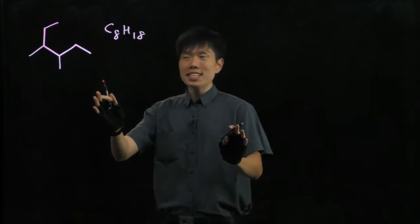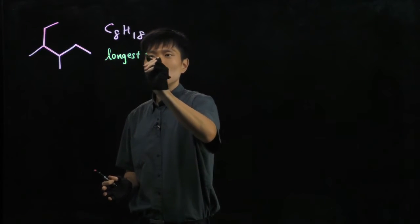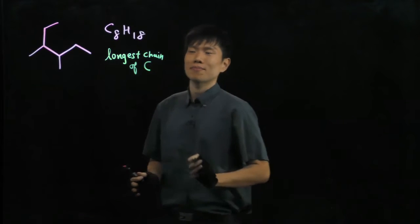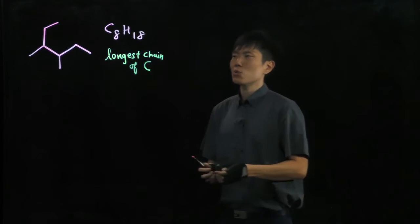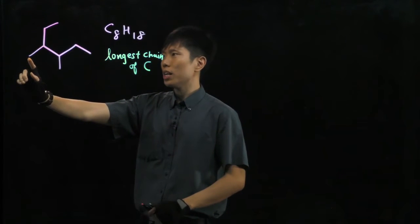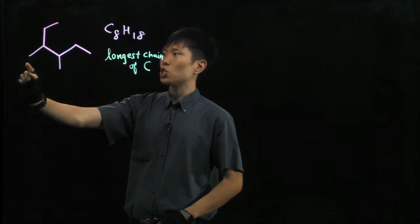Now, to name an alkane, we always look out for the longest chain of carbons. What do I mean? You have to start with the skeleton structure and then you see, if I begin from here, 1, 2, 3, 4. That's the longest I can go without branching.